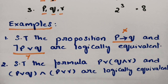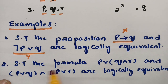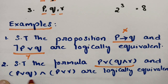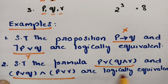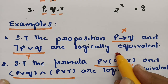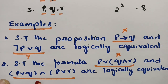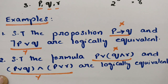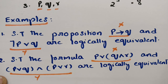The second example is to show that p or (q and r) and (p or q) and (p or r) are logically equivalent. Take the first formula as x and the second as y, draw the truth tables, and if the last columns in the truth table are equal, then x and y are logically equivalent.